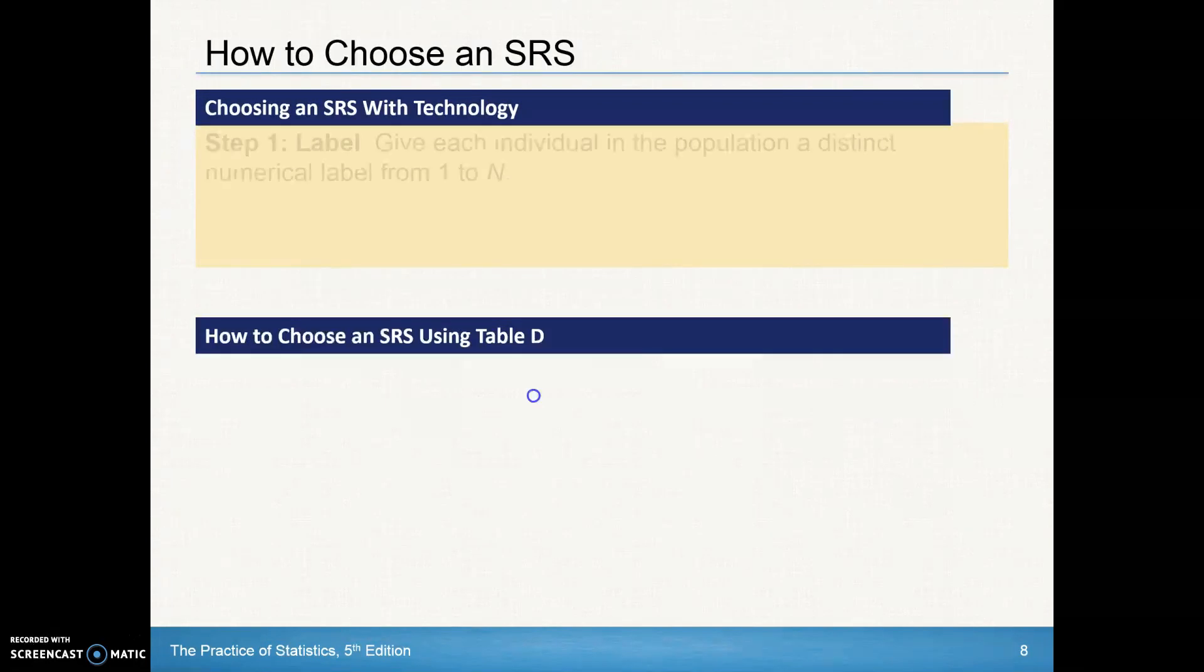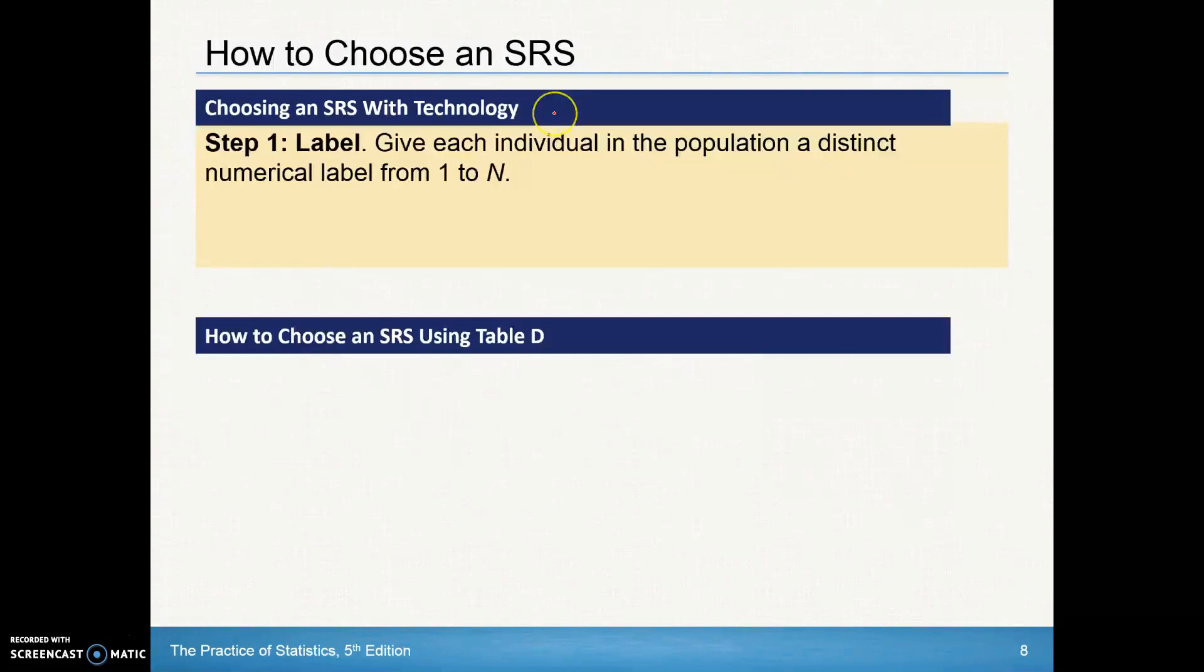At the end of the video, I'll do a demonstration of where you can do this on your TI-Inspire calculator. But what you're going to have to do is give each individual in the population a distinct numerical label from 1 to n.